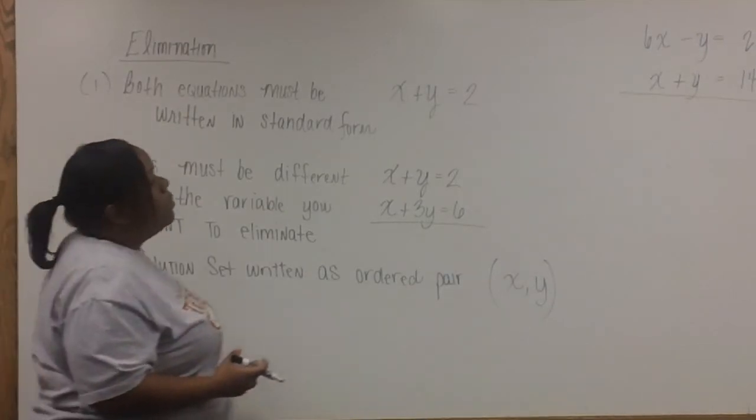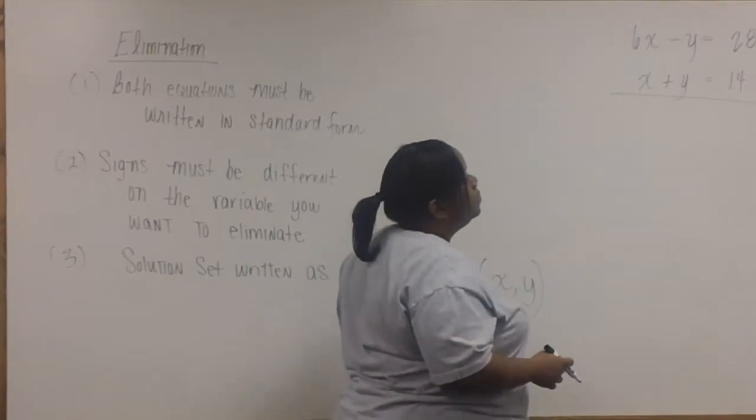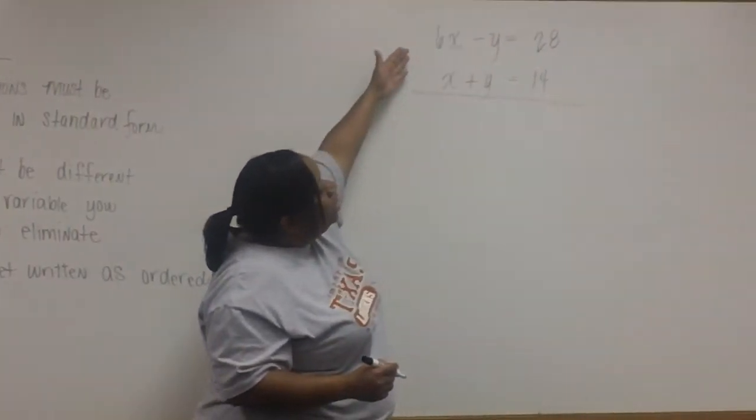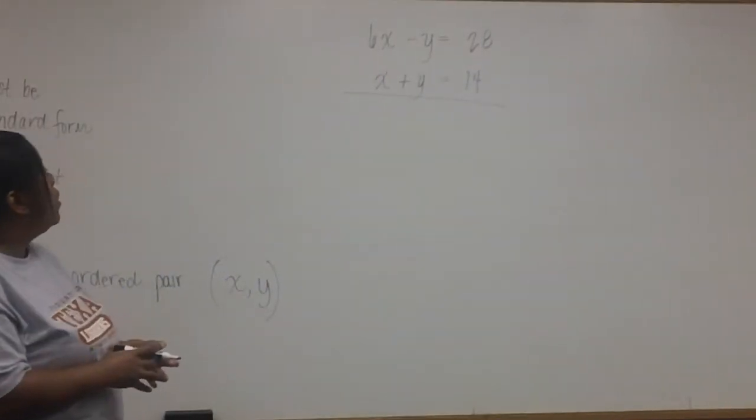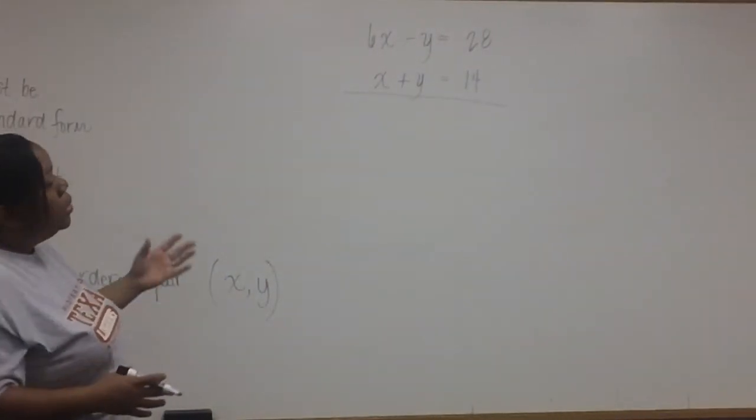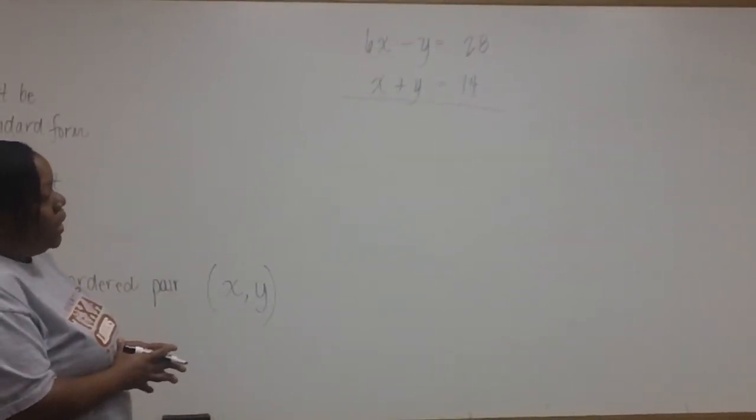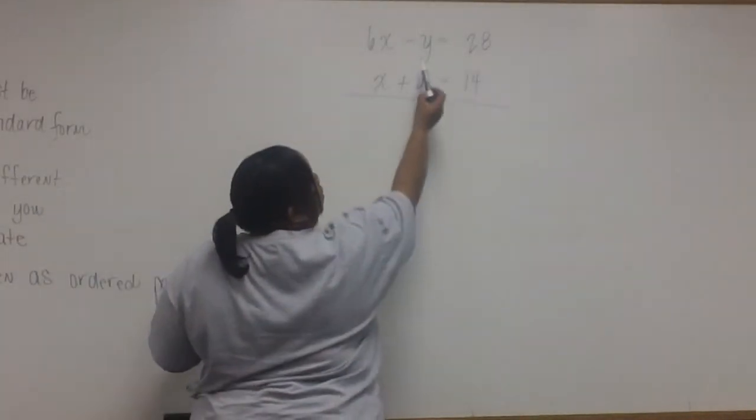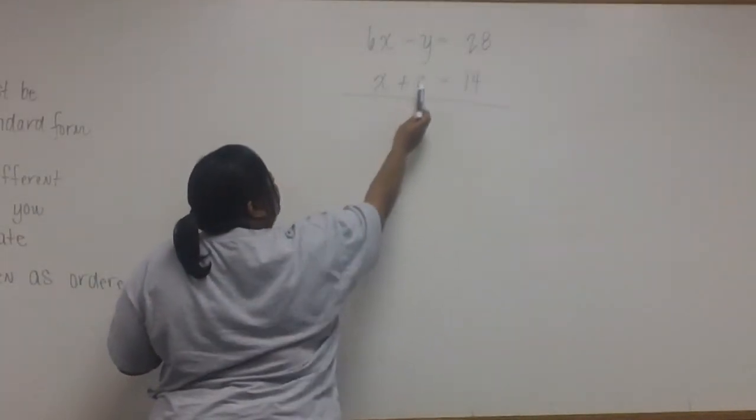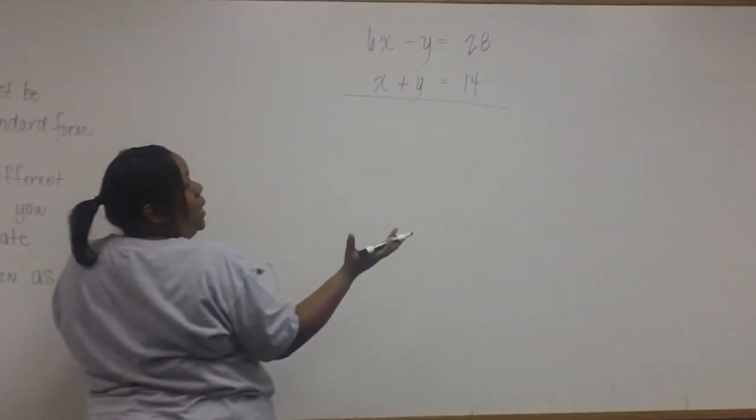Now, the first thing we're going to do is problem one on the homework, and notice that both problems are already written in standard form. So we have to choose whether we want to eliminate the variable x or y. Well, if you look closely, you'll notice that the variable y already has different signs, and it's already eliminated.